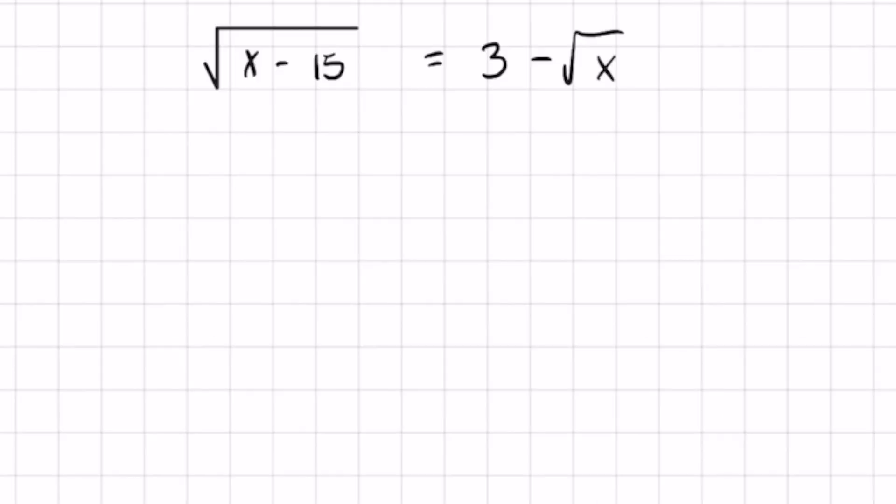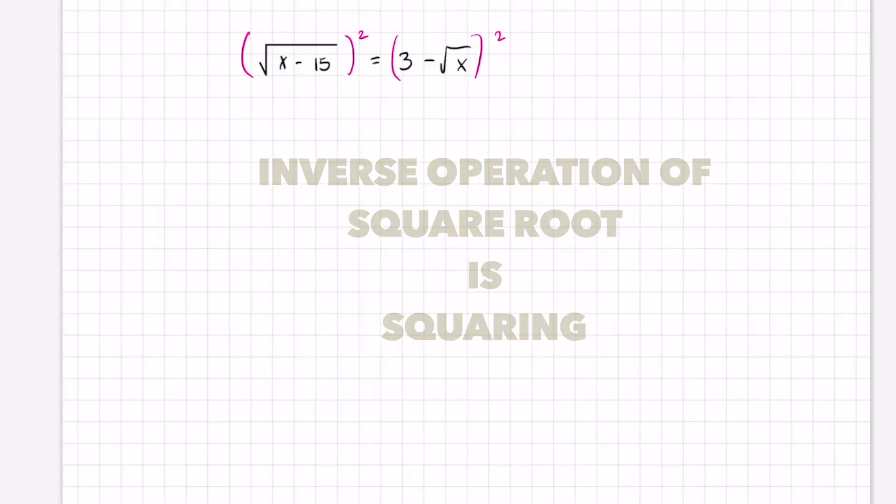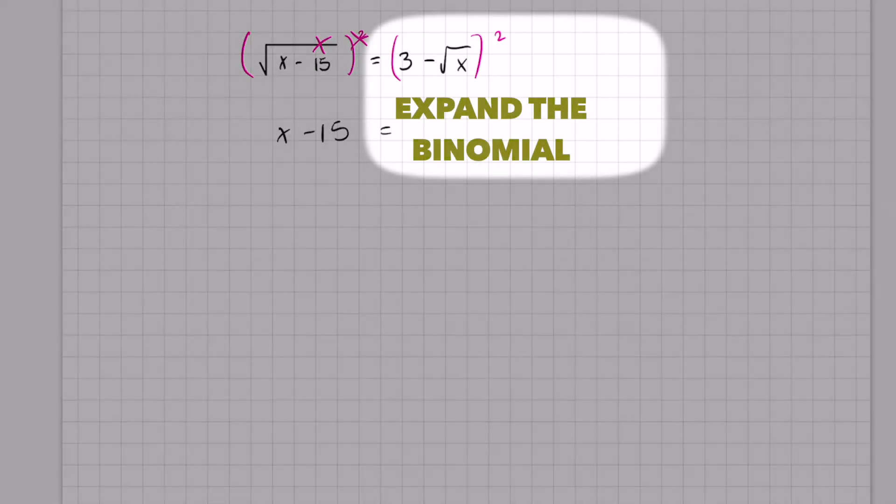We got an equation with a square root, and to cancel out a square root, the first step is to square both sides. That's going to cancel out my square root on the left and I'll be left with x minus 15. On the right side, I'm going to have to multiply this binomial to itself because it's squared.